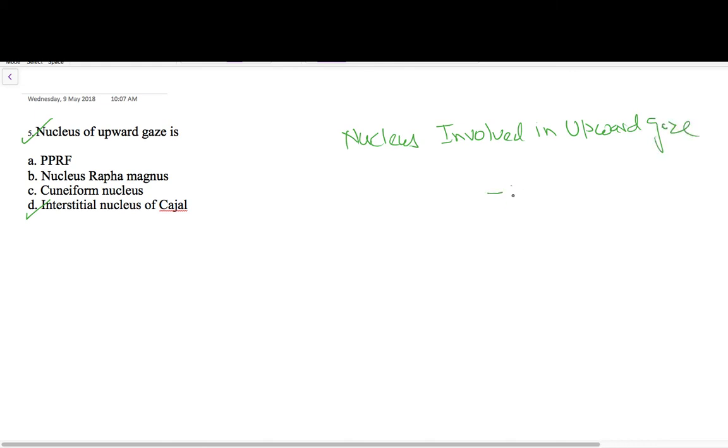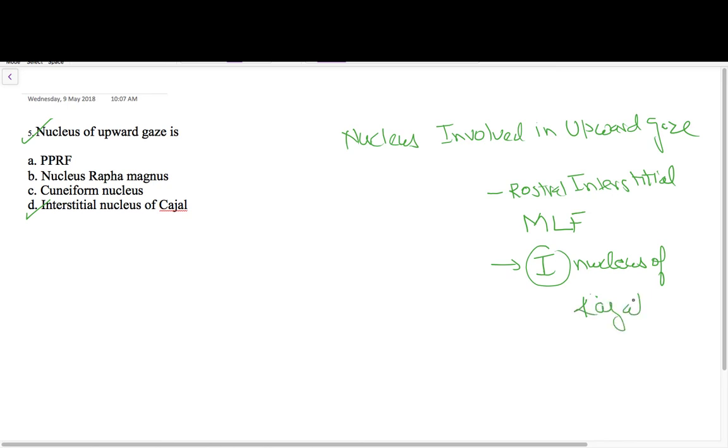So these are: rostral interstitial MLF, interstitial nucleus of Cajal, and posterior commissure.